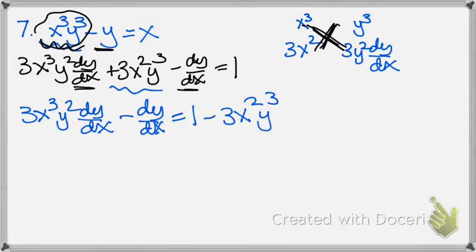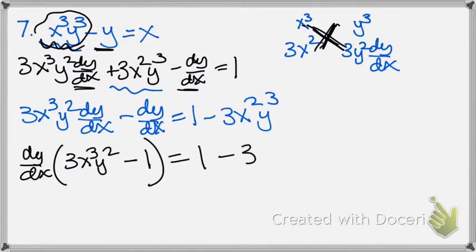So the dy dx terms on the left, everything else on the right. Factor out the dy dx now, and you're left with 3x cubed y squared minus 1, and now you can just divide by it.